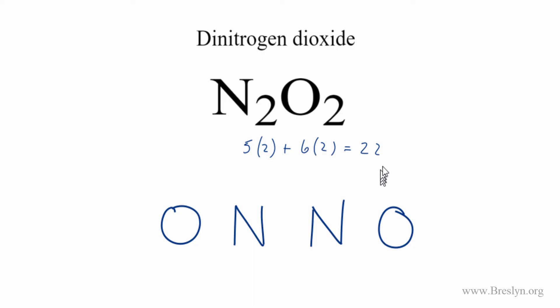We have a total of 22 valence electrons. So we'll put pairs of electrons between the atoms first. That'll create the chemical bonds. There, there, and here.